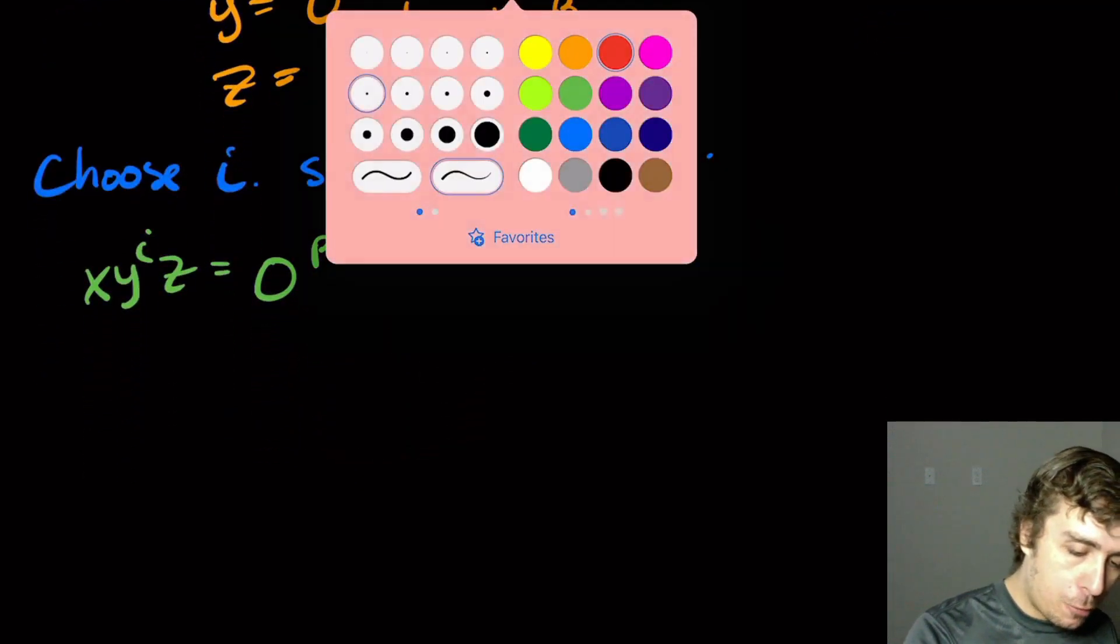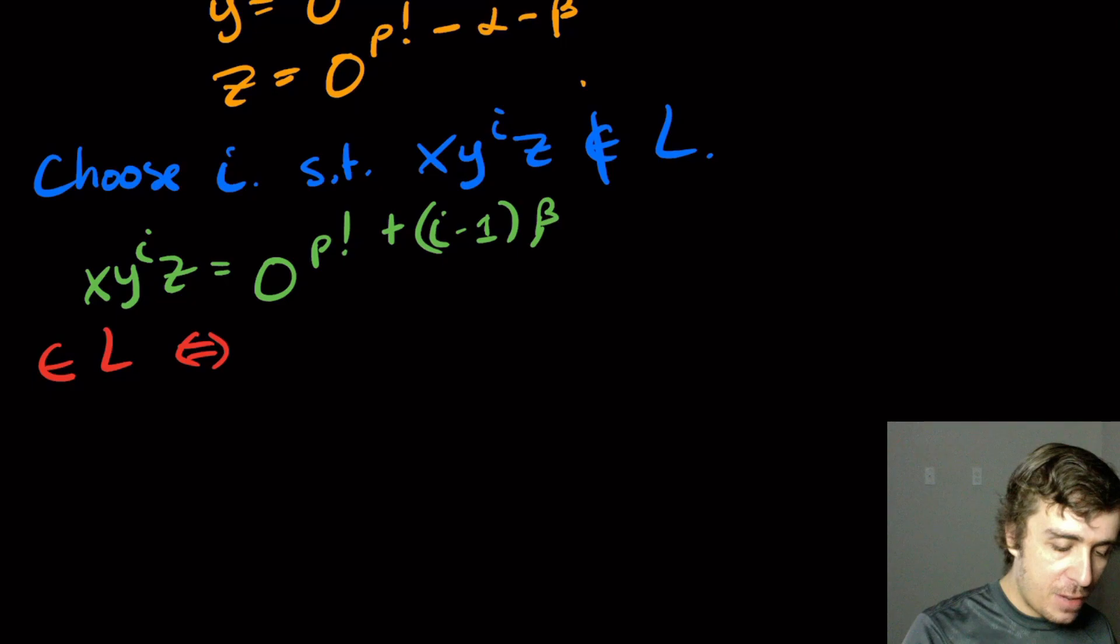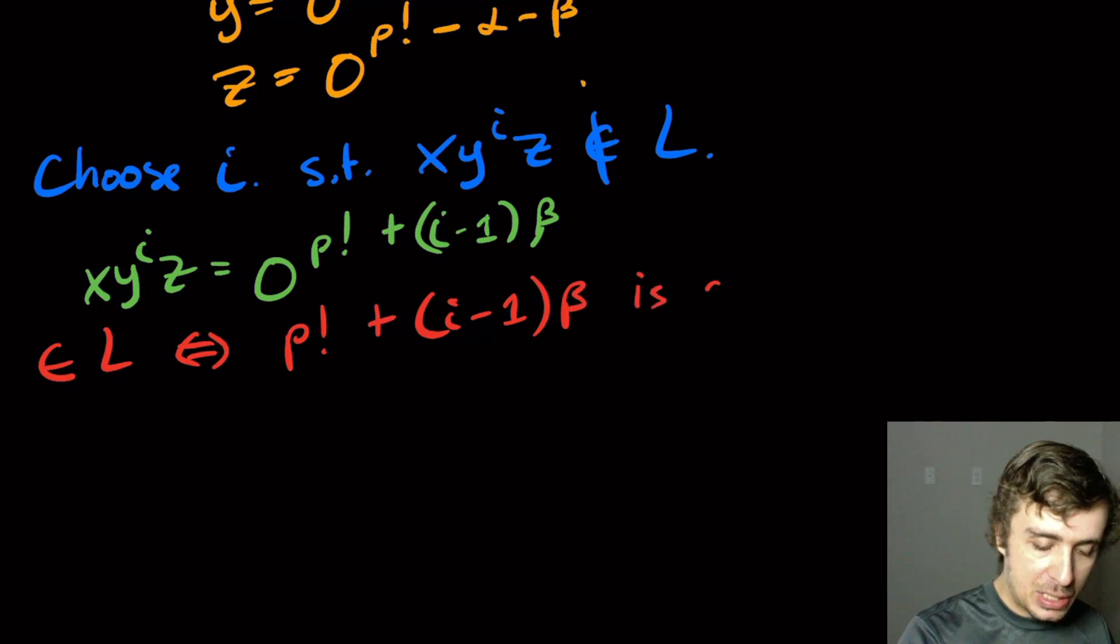So therefore, this string is in L if and only if P factorial plus i minus one beta is a factorial of some number.